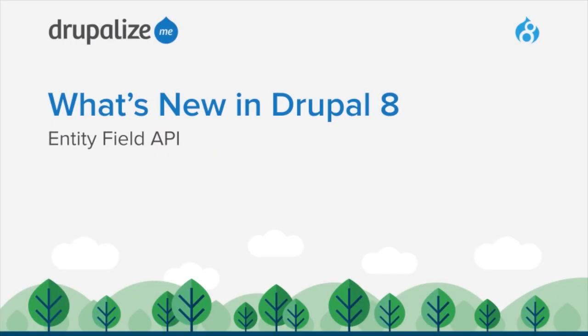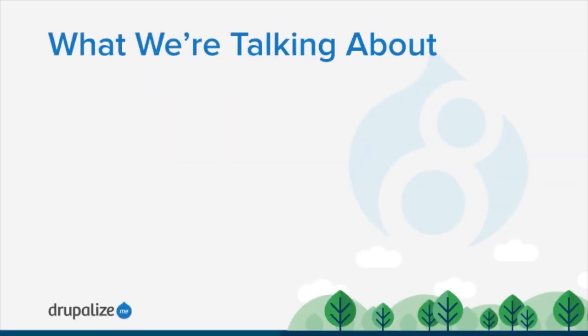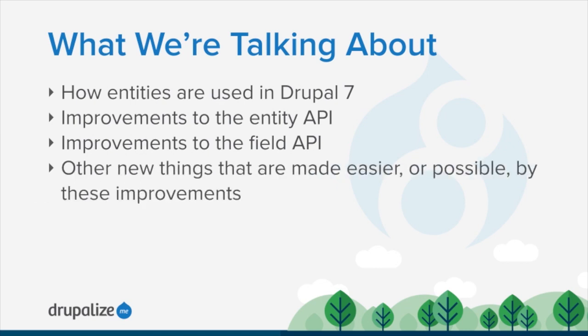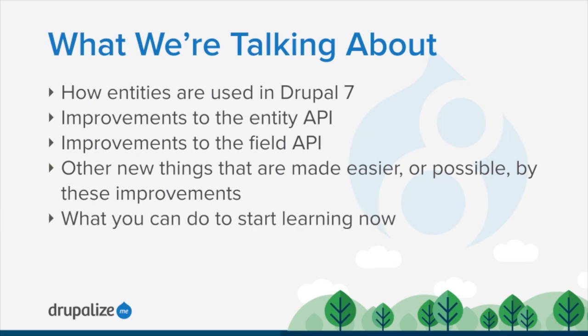Welcome to the Entity Field API edition of our series on what's new in Drupal 8. In this presentation, we're going to get a brief history of the Entity API and its use in Drupal 7 so that we can understand where the pain points are and how Drupal has improved upon both the Entity API and the Field API. We'll cover some of these improvements and then talk about how this impacts the types of things we can build in Drupal 8. Finally, we'll wrap things up with some thoughts about prerequisite knowledge required for using and fully understanding the new APIs.